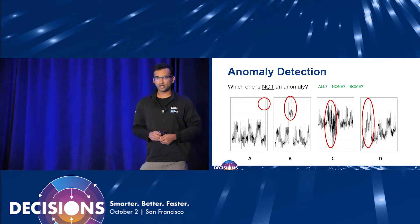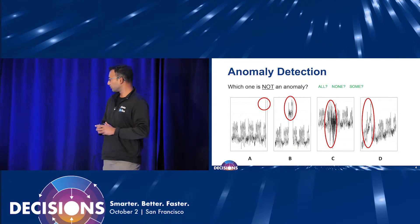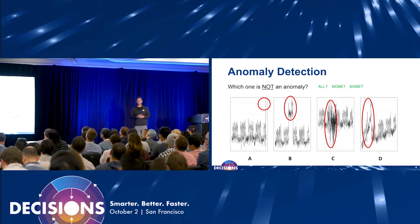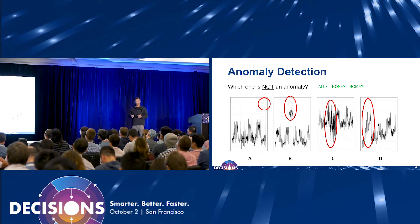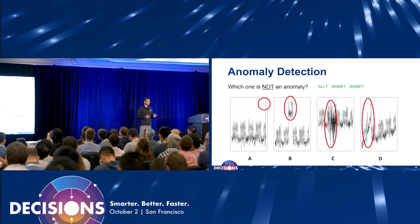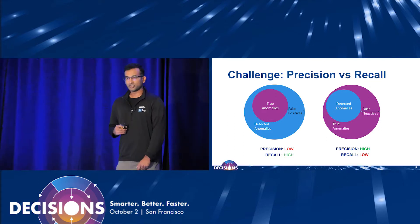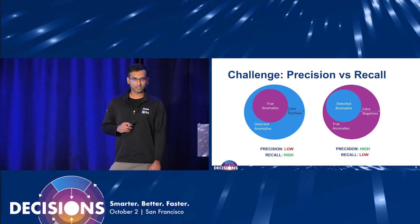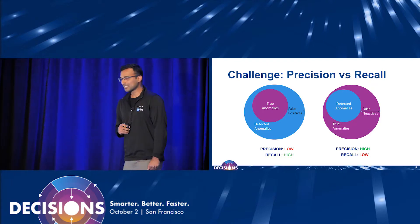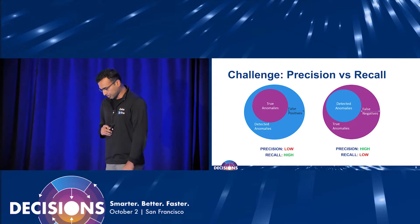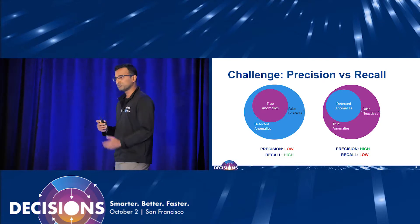Quick question: how many of you think which of these is an anomaly? Take a few seconds. I'm pretty sure for some of you, all of them are anomalies. For some, none. And for some people, it's a mixture of A, B, C, or whatever. So the big challenge here is to make all of you feel right. That's basically the big challenge that we have with anomaly detection.